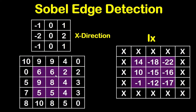We will do the same for the second pixel, which is 6. We put the center of the kernel on 6, so negative 1 will be on 9, 0 on 9, 1 on 4, negative 2 on 6, 0 on 6, 2 on 2, negative 1 on 9, 0 on 8, and 1 on 4. Multiplying and adding: 9 by negative 1, plus 9 by 0, plus 4 by 1, plus 6 by negative 2, plus 6 by 0, plus 2 by 2, plus 9 by negative 1, plus 8 by 0, plus 4 by 1 gives negative 18. We repeat this for all pixels in the highlighted region.